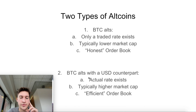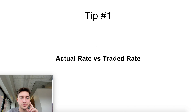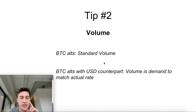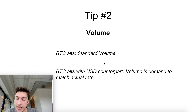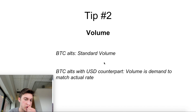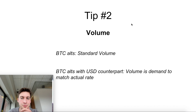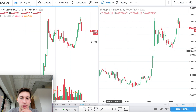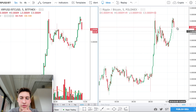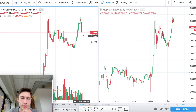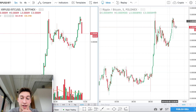That was tip number one: looking at the actual rate versus the traded rate. That can only be used with altcoins that also have a USD counterpart. Now let's look at volume. Just like the order book is different for USD counterpart alts versus non-USD counterpart alts, the volume is going to behave similarly. For a standard BTC alt, you're probably going to see more standard volume patterns that reflect supply and demand.